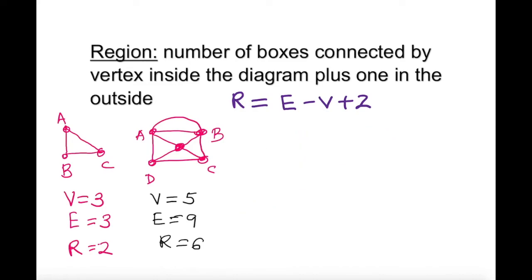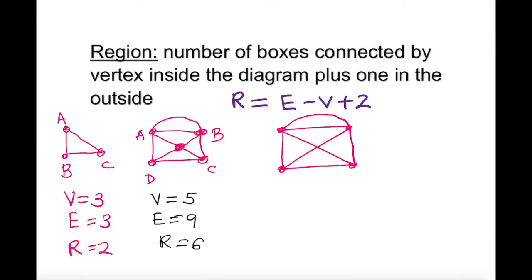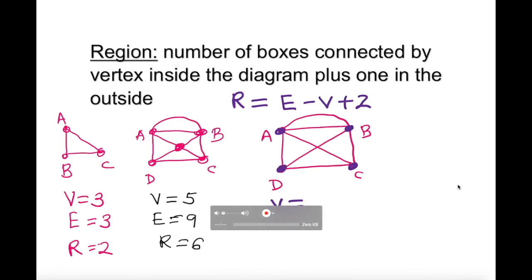Now I'm going to create another example that confuses some students. If I have this diagonal, another diagonal, and this one up here — a, b, c, d. The number of vertices: one, two, three, four. Notice I don't have any point in the middle, so there is no vertex there. So in this case there are four vertices.